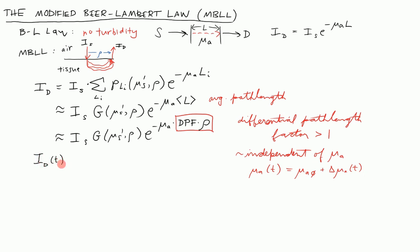Let's write this expression out one more time. We've got the detected signal as a function of time equaling that same I_s, that same G, and then it's equal to e to the minus mu_A_0 DPF times rho, times e to the minus delta mu_A of t times the DPF times rho. Now what's interesting about this is that all of this stuff is a constant not changing with time. I can bundle all of this into a global constant and think about the ratio of the signal at the detector at an arbitrary time T versus the signal that arrived at the detector at the start of the experiment, say at time T equals zero. If I set delta mu_A of T to zero, by definition delta mu_A hasn't changed from its initial value when T equals zero.